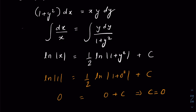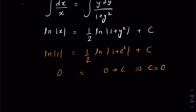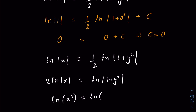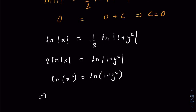With c = 0, the solution becomes ln|x| = ½ ln|1 + y²|, which gives 2 ln|x| = ln(1 + y²), and therefore ln(x²) = ln(1 + y²). We don't need the modulus around (1 + y²) since it's already positive. Removing the logarithms from both sides gives us the conic section equation.